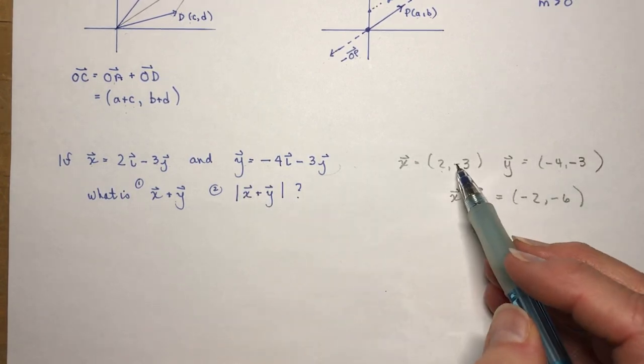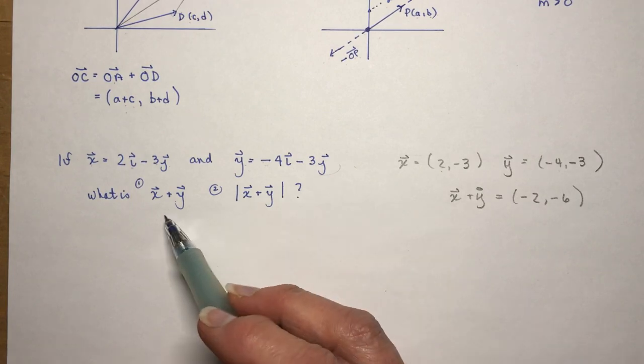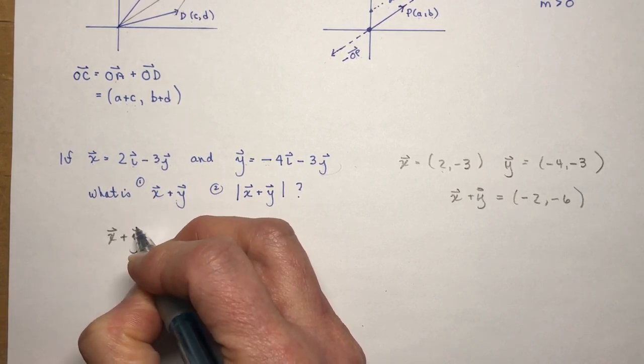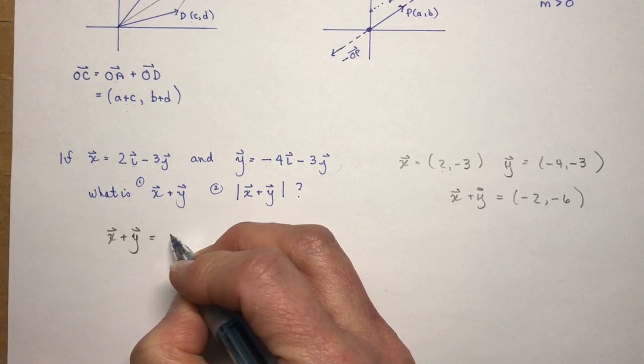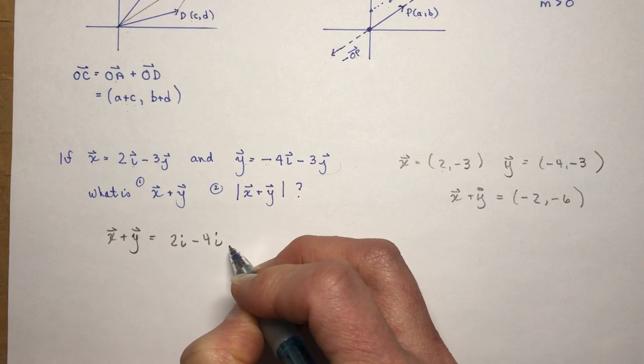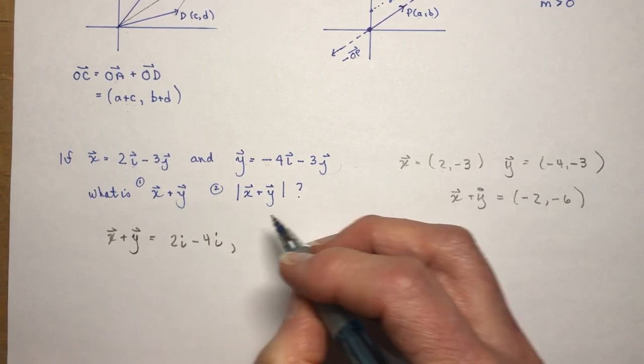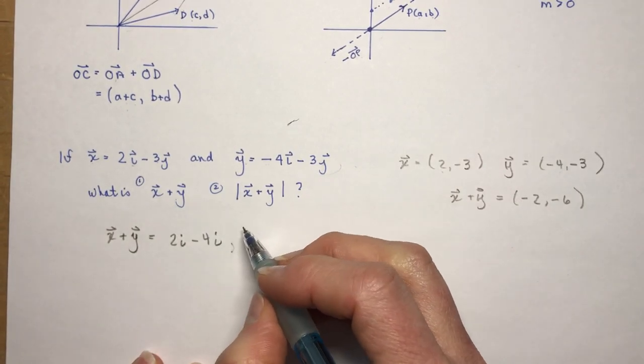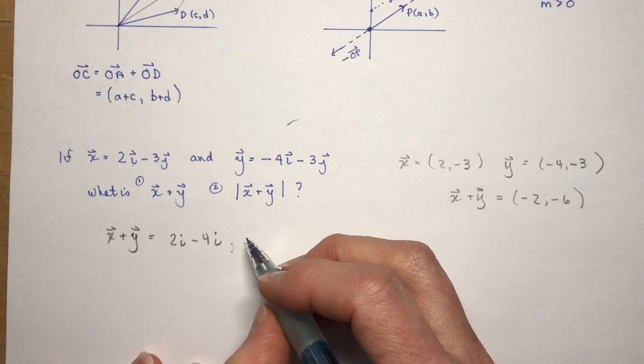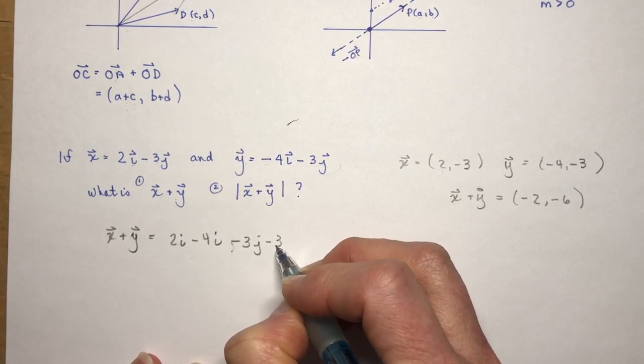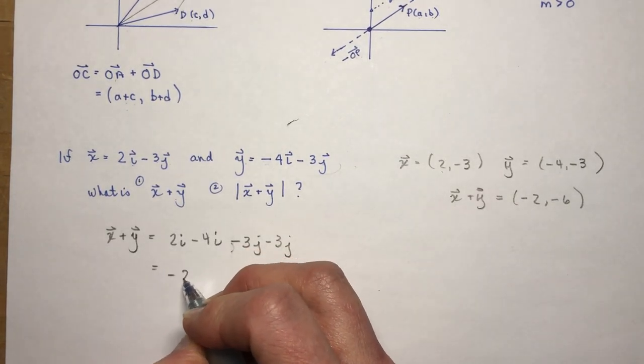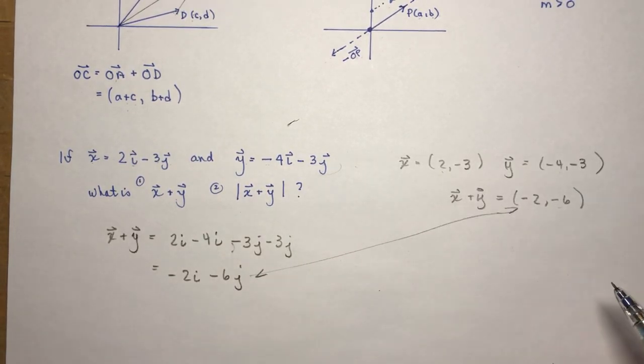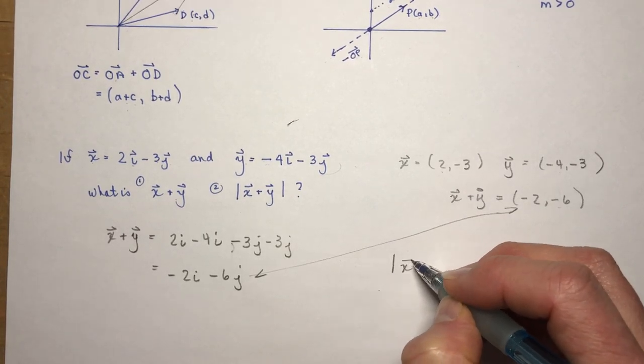So that's switching it over to getting rid of these little unit things. Or if I kept the unit parts, I would just say, well, it's the same thing, only I just leave them in there. Leave them in the calculation. So I would say this is 2i minus 4i, and then I would have minus 3j minus 3j. So that gives me minus 2i minus 6j, which of course is the same thing as this over here. They're the same thing.